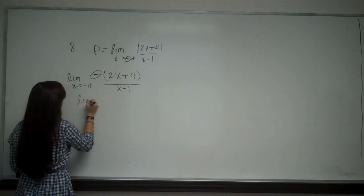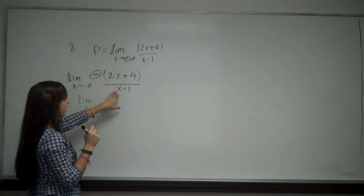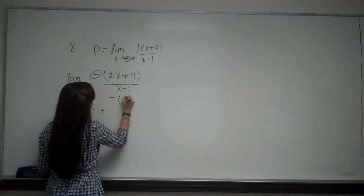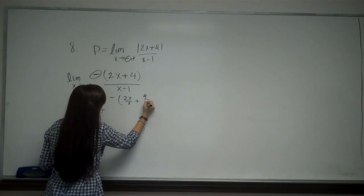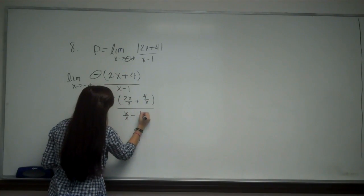So what I'm going to do is take the limit, and I'm going to divide every single part by X because that's the degree of the highest. So I have negative, I'll have 2X over X plus 4 over X, all over X over X minus 1 over X.